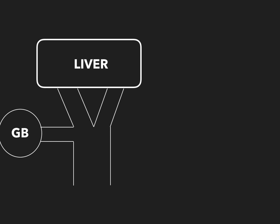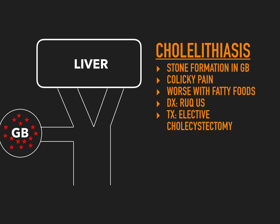The first disease is cholelithiasis. What that means is that there is stone formation inside of the gallbladder — you can see these red little stones inside of the gallbladder. The key to picking this out in a question is that the patient typically will have colicky pain — waxing and waning in the right upper quadrant. Sometimes they'll have cramps, then they'll disappear, then come back. That's colicky pain, and it's very classic of cholelithiasis.